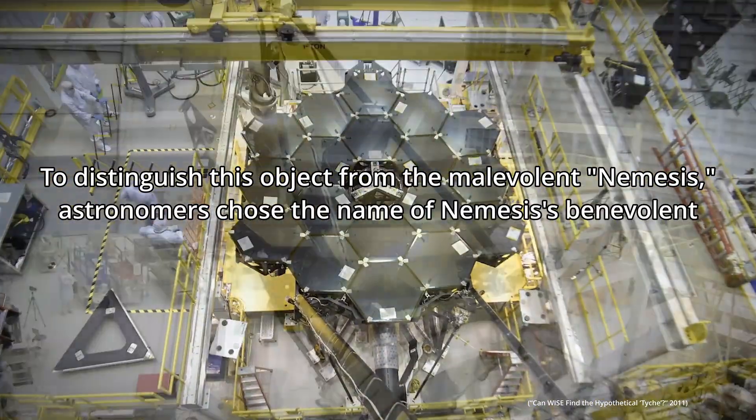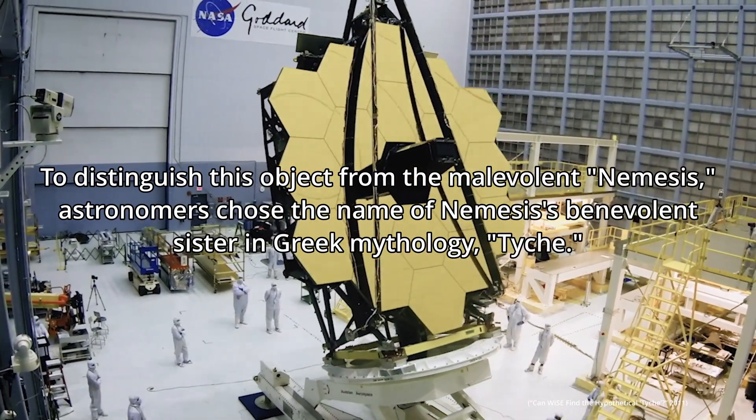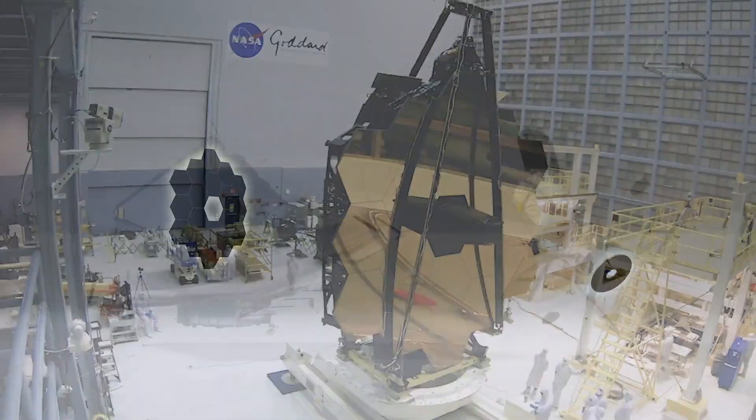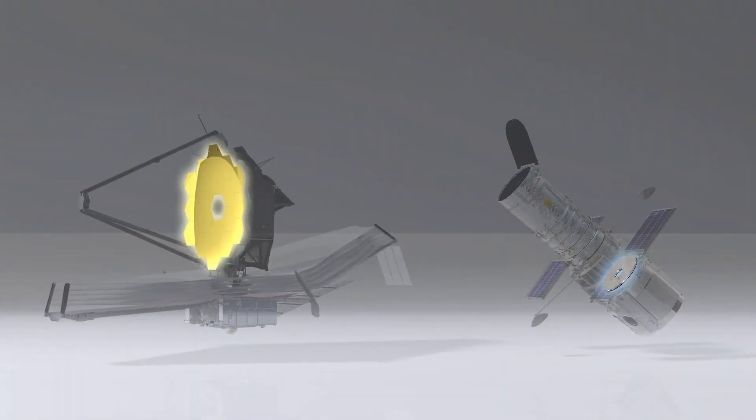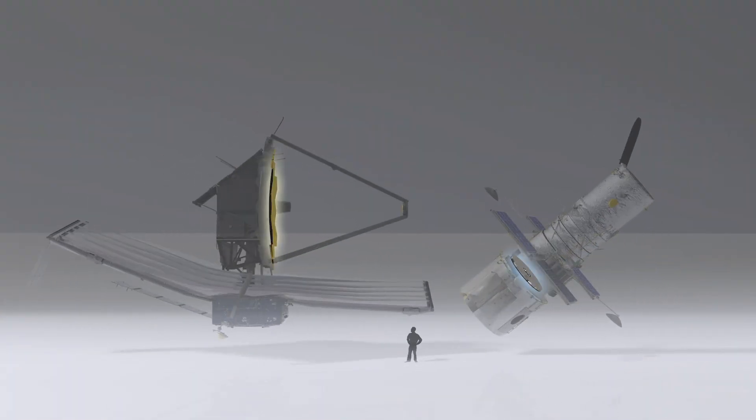So yeah, there might still be a binary companion to our sun that hasn't been found. It's not likely, but Tyche could be out there. As for Nemesis the Murder Star though? Yeah, probably not. Thanks for watchin'. See you next week as I endeavor to have a consistent upload schedule.